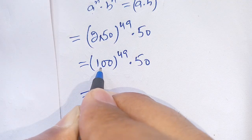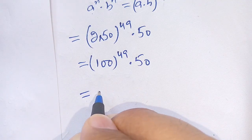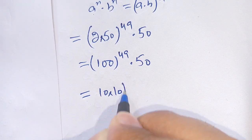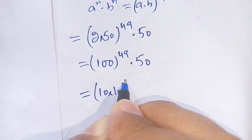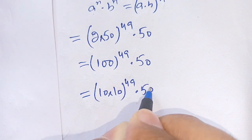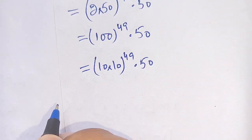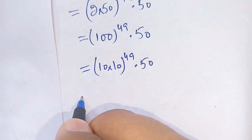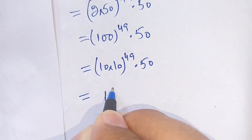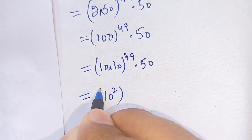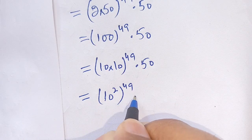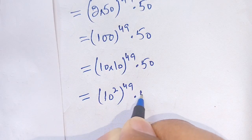Now we can write 100 as 10 times 10, giving us 10 times 10 whole raise to power 49 times 50. In the next step, we can write this as 10 raise to power 2 whole raise to power 49 times 50.